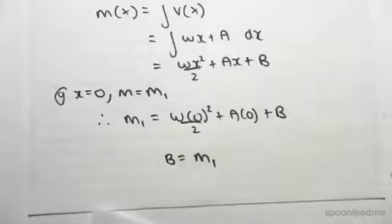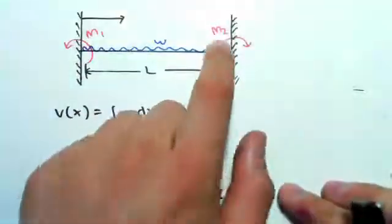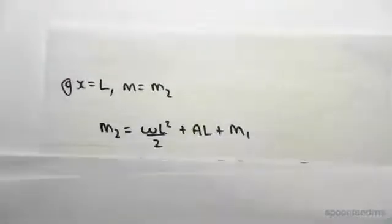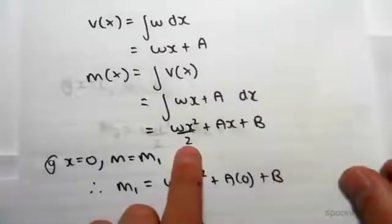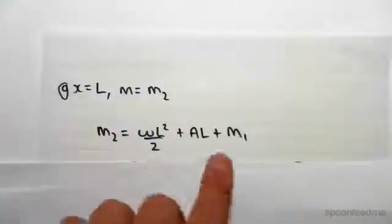The next boundary condition is that at x equals L, at the full length here, the moment is equal to M2. So x equals L, M equals M2. Substituting into this equation for L and M2, M2 equals wL squared over 2 plus AL plus B, where B is now M1. We just found that, B is equal to M1.